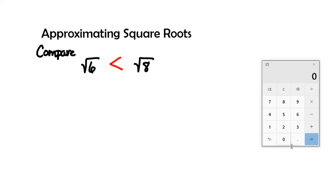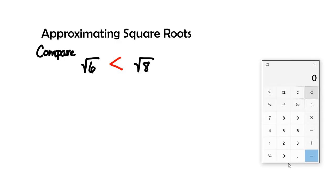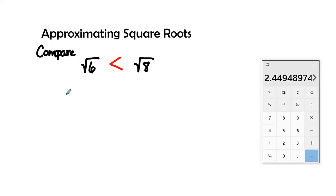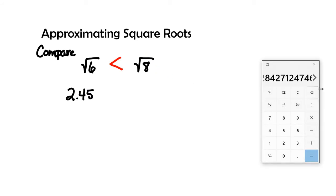Let's double-check by computing the values. The square root of 6 is approximately 2.45 — since the next digit is 9 we round up. The square root of 8 is approximately 2.83. So using the calculator to find the values confirms our comparison. We can also use the method from the previous problem to find the approximate value.